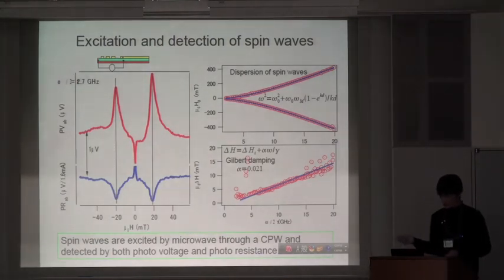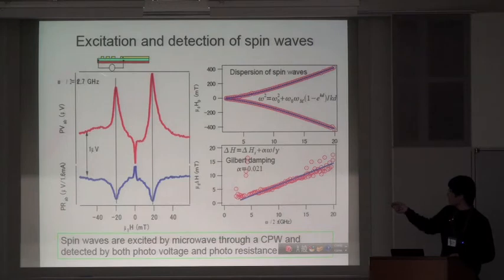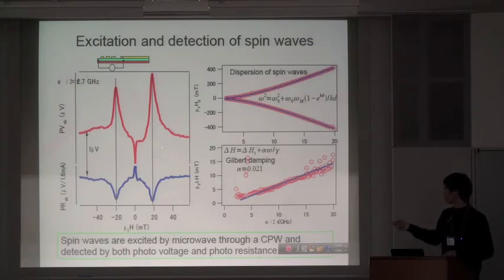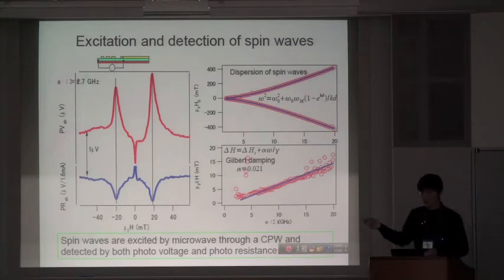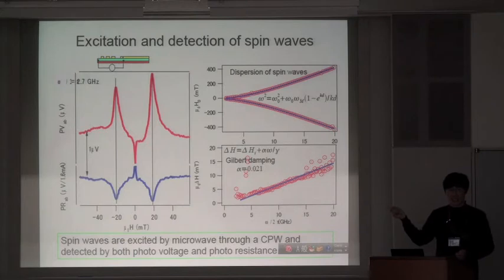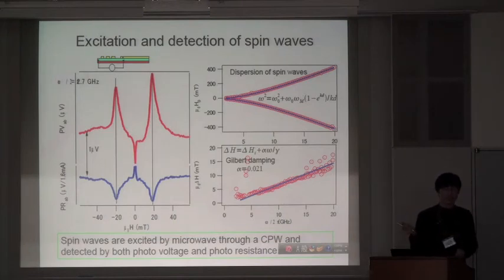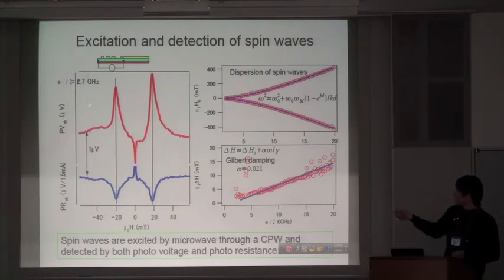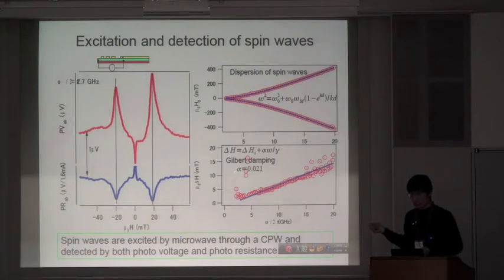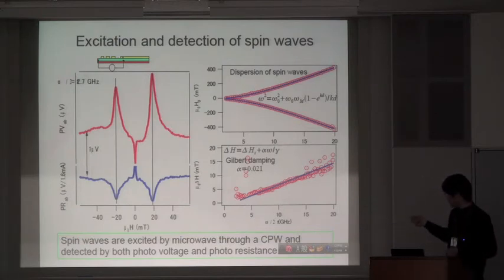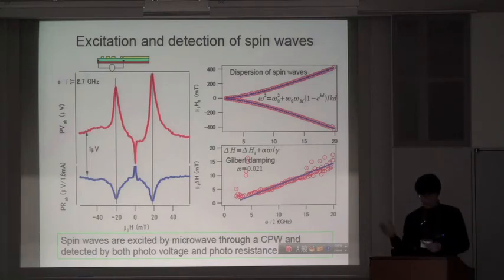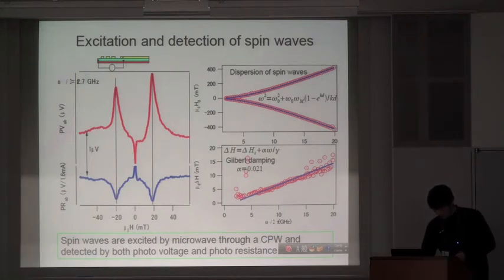And here, by exciting here and also detected here, we can get the voltage and also resistance. We get the resonance peaks, and these peaks are at frequency 2.7 GHz. And we also can plot these peaks as a function of frequency, we get this dispersion curve, which can be well fitted by dispersion of spin views. And by the line width, the width of the line shape, we can get the Gilbert damping of this system, the waveguide, the spin-wave waveguide system. My sample is 2.1 percent, the Gilbert damping equal to 2.1 percent.